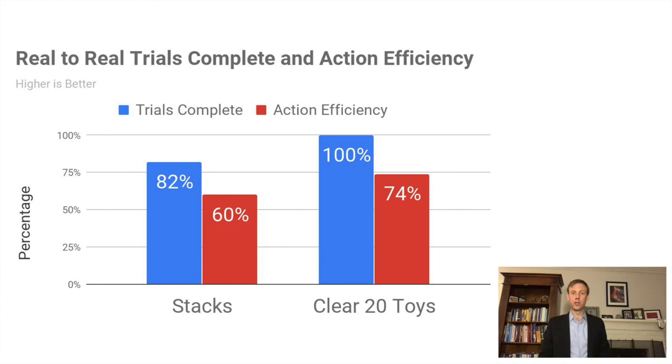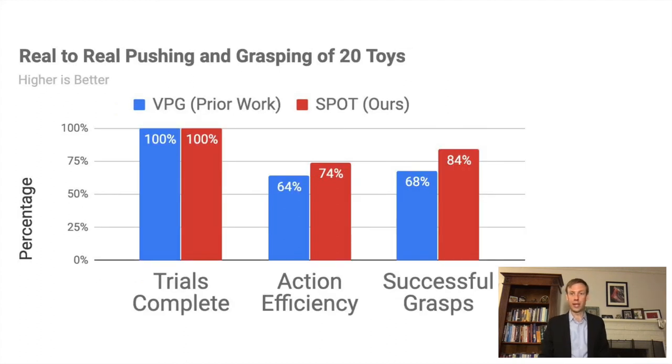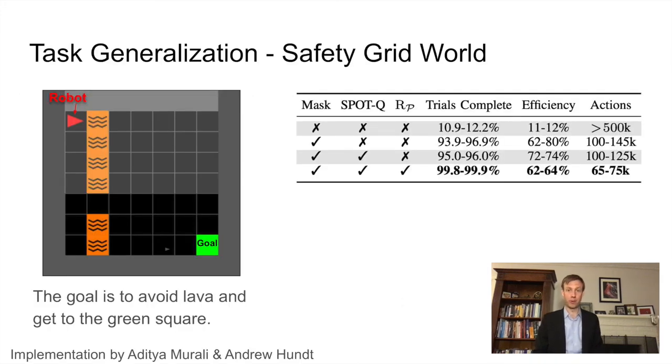We also evaluated real to real trials. We trained stacking for about 2,500 actions, which led to an 82% trial success rate and 60% efficiency. At the time the results came back, we were very excited to see that the sim to real model actually outperformed the real to real model, which is great because exploring in a simulation is lower cost and lower risk. In the 20 toys test, the SPOT framework matches VPG prior work with 100% task completion and improves both the rate of grasp successes from 68% to 84% and action efficiency from 64% to 74%. We are very happy with these results.